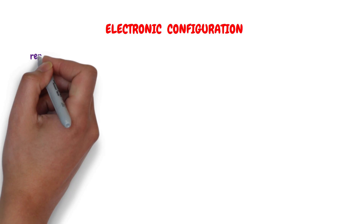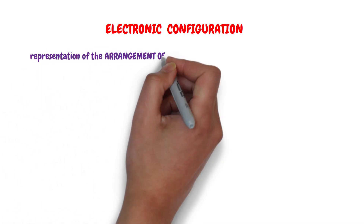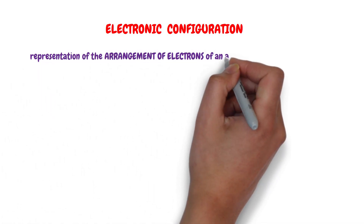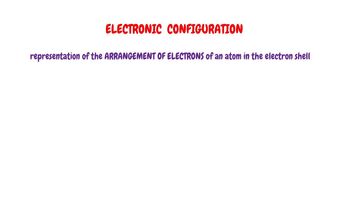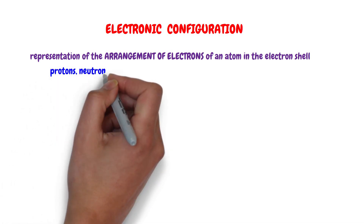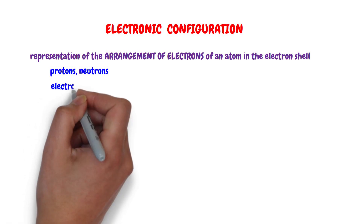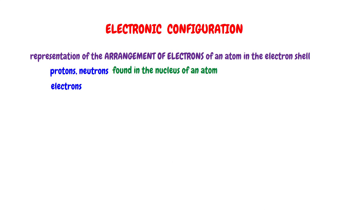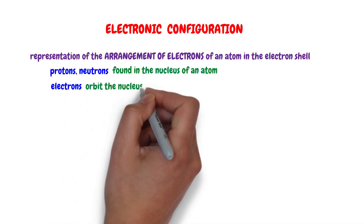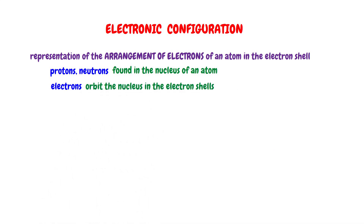The electronic configuration is the representation of the arrangement of electrons of an atom in the electron shell. Atoms contain three subatomic particles: protons, neutrons, and electrons. Protons and neutrons are found in the nucleus of an atom located at the center. Electrons orbit the nucleus in the electron shells or orbitals.